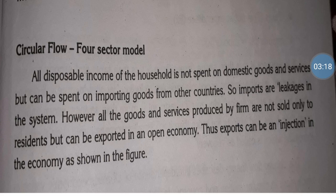In the four-sector economy, we consider disposable income of household. Disposable income means after paying all taxes, whatever income remains with us. Households will not spend all their disposable income on buying domestic goods and services — some money they will spend on importing goods from other countries. Import is considered a leakage in the system because money flows out of our country.